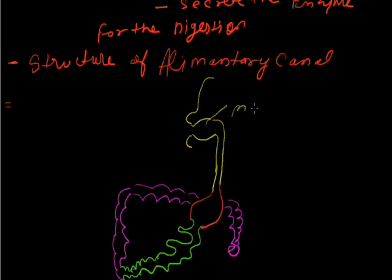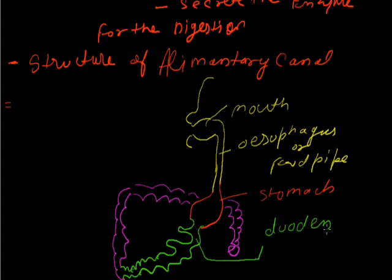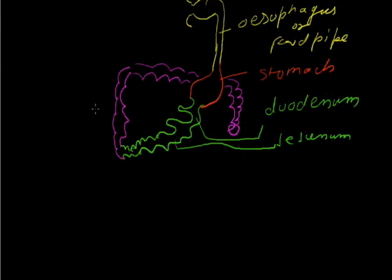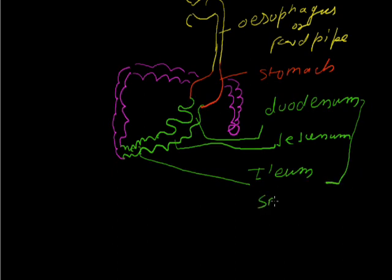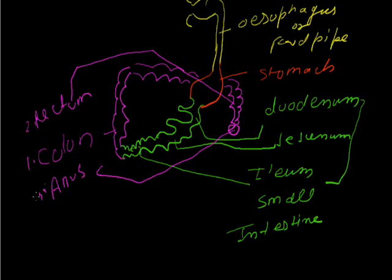Labeling each part: from the mouth we have the esophagus, also known as the food pipe. Then we have the stomach. The small intestine is divided into three parts: the first is the duodenum, the middle one is the jejunum, and the final one is the ileum. Then moving to the large intestine, which starts from the colon, then the rectum, and finally the anus.